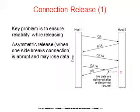Connection Release. Releasing a connection is easier than establishing one, but there are more pitfalls than you might think. There are two styles: asymmetric release and symmetric release. Asymmetric release works like the telephone system — when one party hangs up, the connection is broken. Symmetric release treats the connection as two separate unidirectional connections, each released independently. Asymmetric release is abrupt and may result in data loss. For example, after a connection is established, host 1 sends a segment that arrives at host 2, then sends another segment, but host 2 issues a disconnect before it arrives — the connection is released and the data is lost.